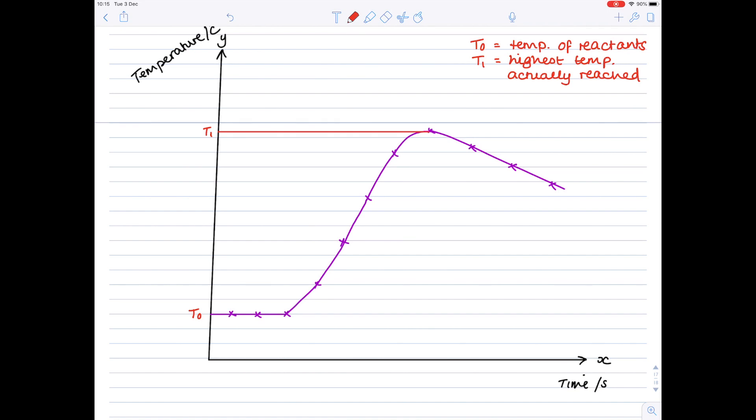However, there's a huge amount of heat lost to the surroundings. And actually, by drawing this graph, we're not getting a completely accurate representation of what's going on. So we have to try and work out what that highest temperature would have been based on there not being any heat loss to the surroundings.